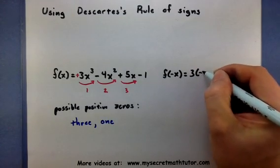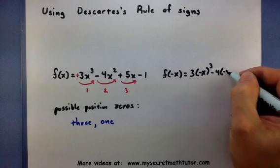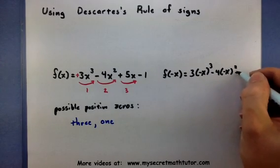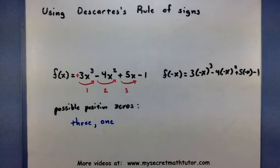So we're going to take a look at 3(-x)³ - 4(-x)² + 5(-x) - 1.